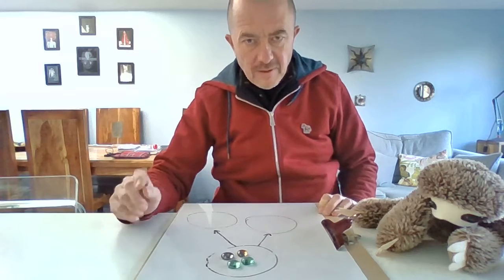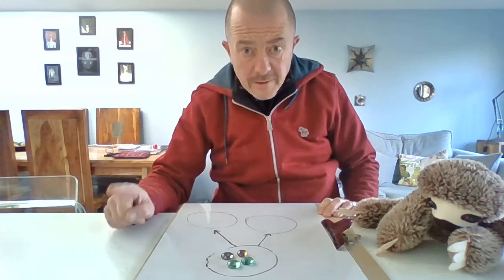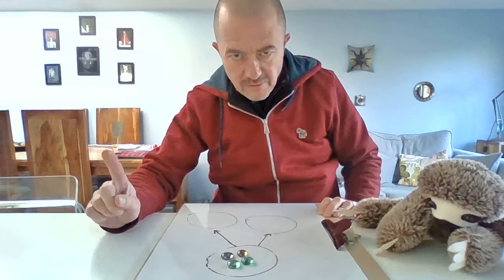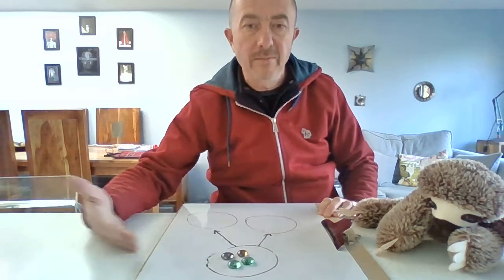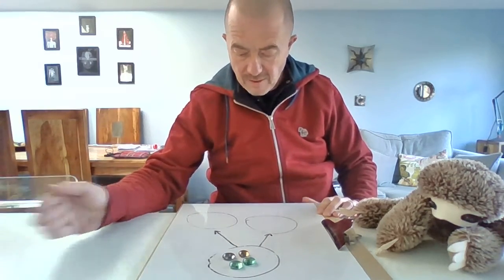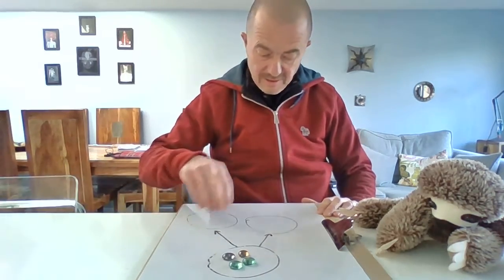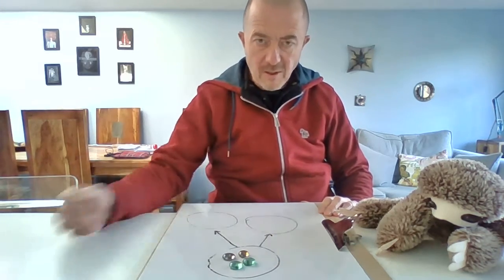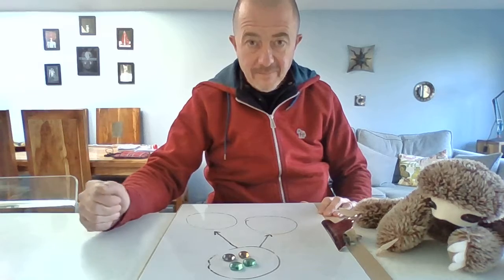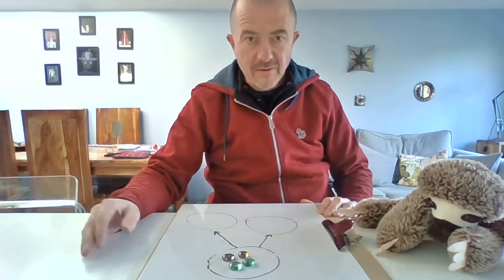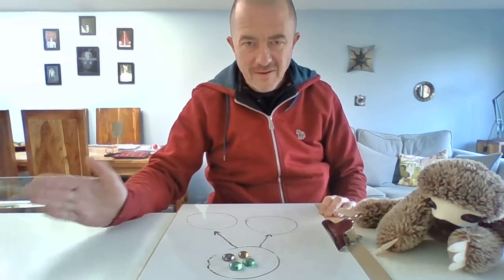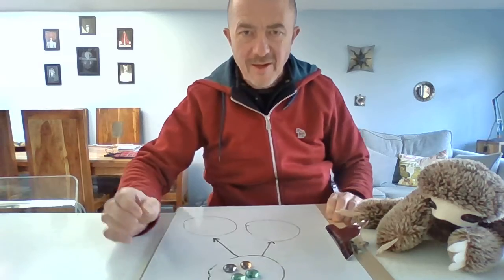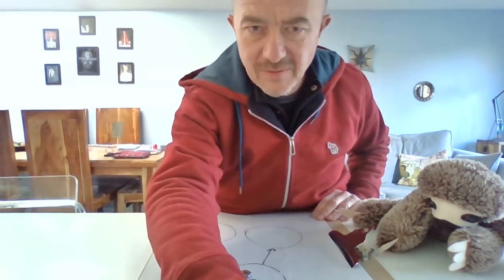Have a go! Now I know that some of you are so good that you use your subitising and you can just look at numbers and know how many they are, but I'd like you — even if you can still see it — to have a go at using the part-part-whole model. See how you get on. There might be lots of things to find out. If you find anything of interest and you want to let us know, please do so. Okay guys, enjoy your learning. Cheers, bye!